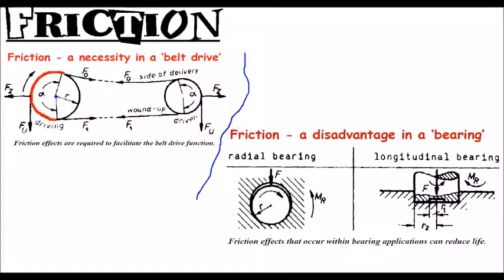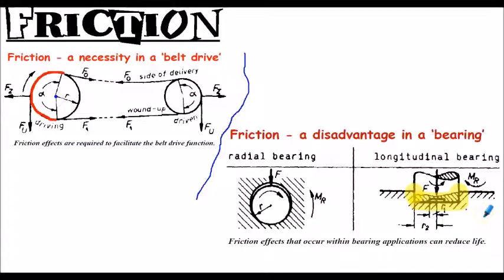Journal bearings are radial bearings where you have a shaft in a recess with metal on metal as the shaft turns. You would try to lubricate that system as best you can to reduce friction effects and increase the design life. So within a single application like a belt drive, you can have friction as both friend and foe simultaneously, depending on which component you are considering.